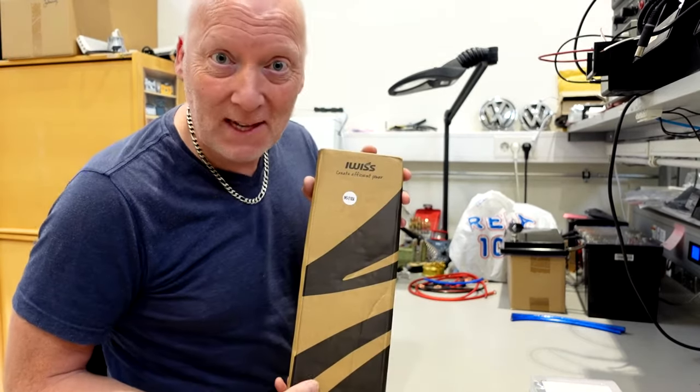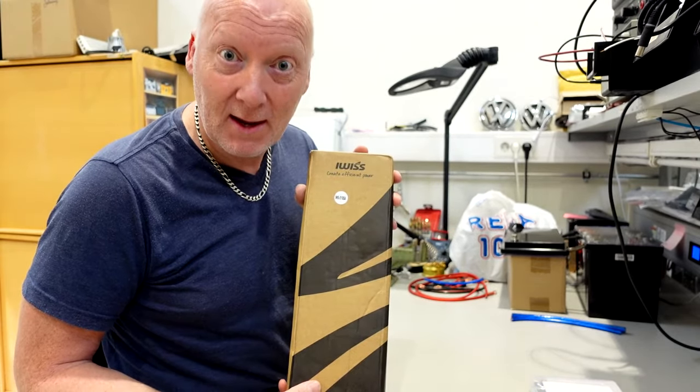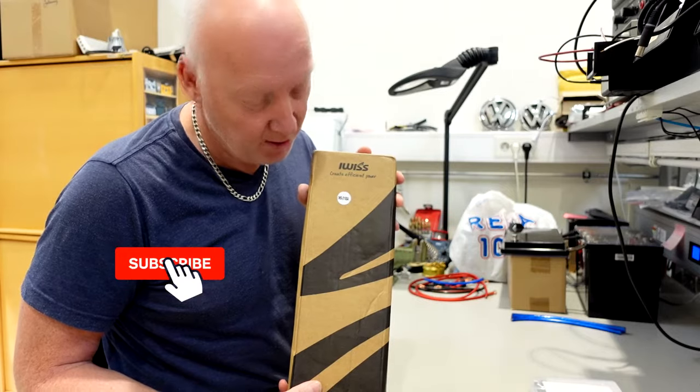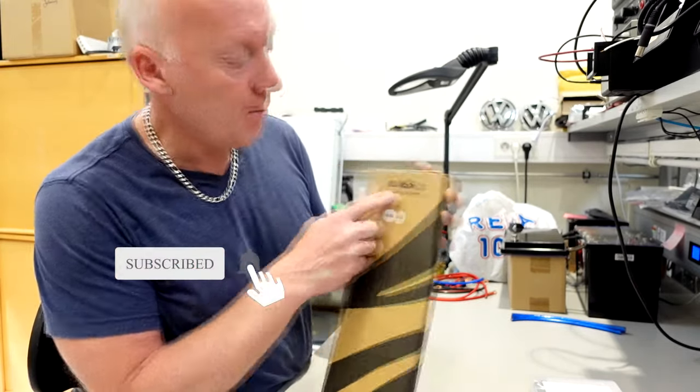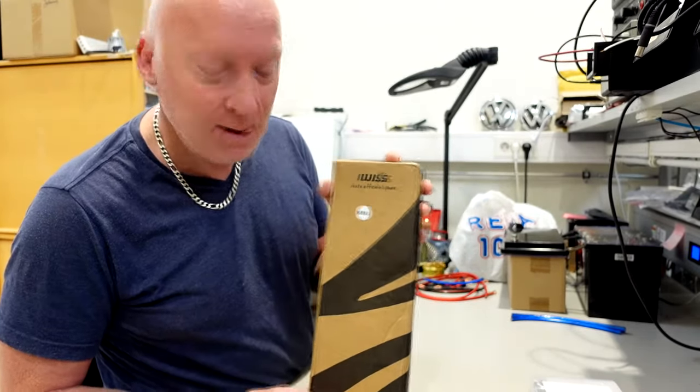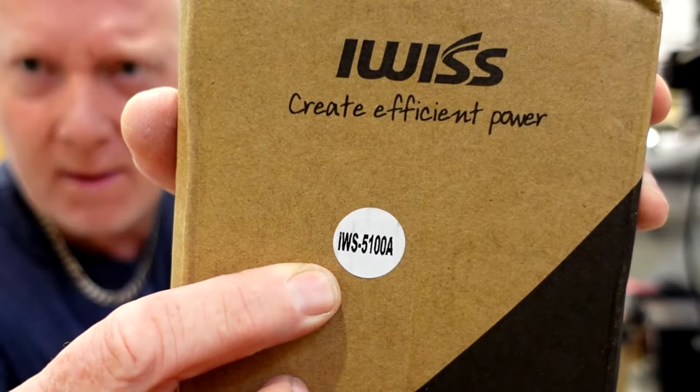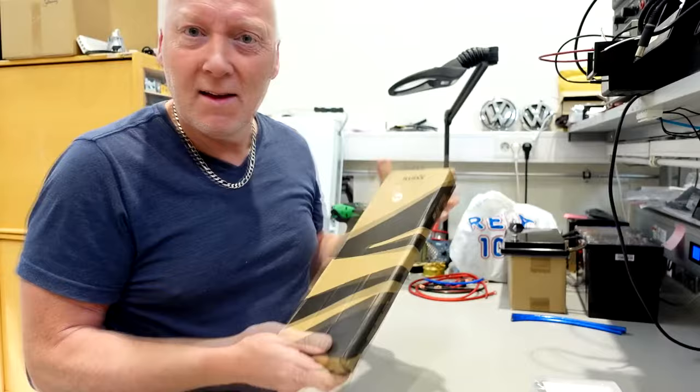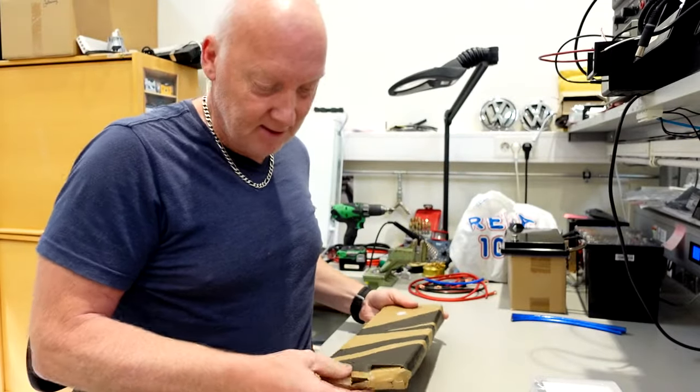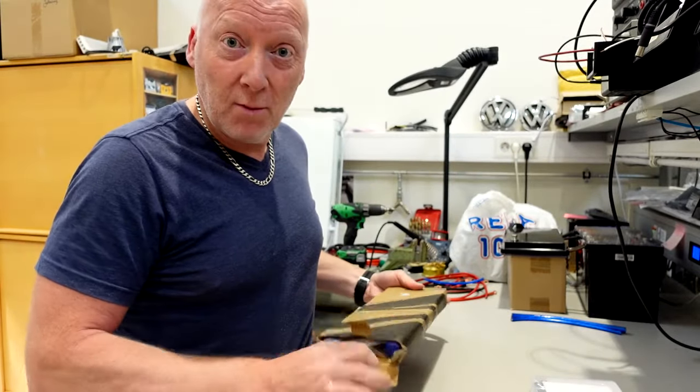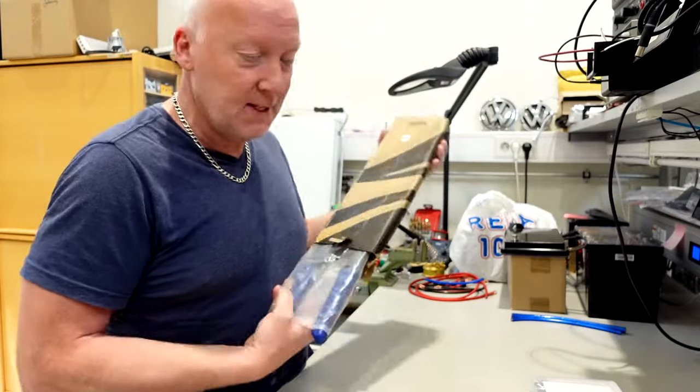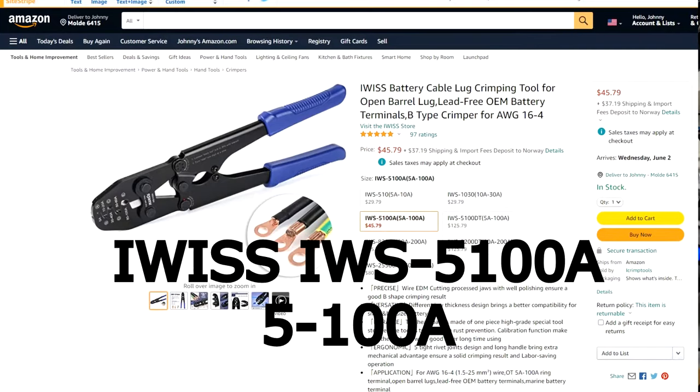Hello guys, I just got myself a new crimper, a cable shoe crimper. This one is from Ivis. You can buy it from Amazon or Aliexpress. I will provide links from both down below.